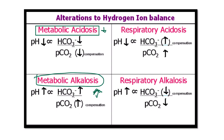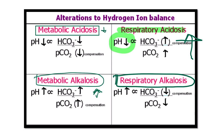In respiratory acidosis, pH is reduced but the other parameters increase — they move in the opposite direction. In respiratory alkalosis, when pH increases, the other parameters reduce. So in metabolic cases, all parameters move in the same direction; in respiratory cases, pH moves opposite to the other two parameters. Thank you.